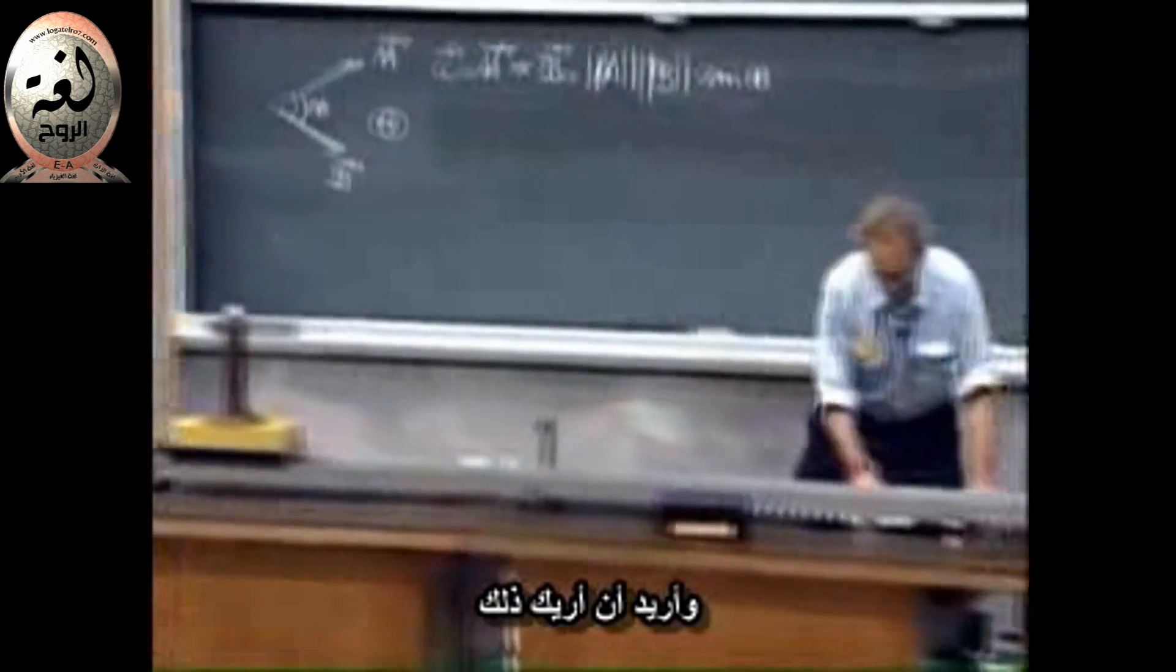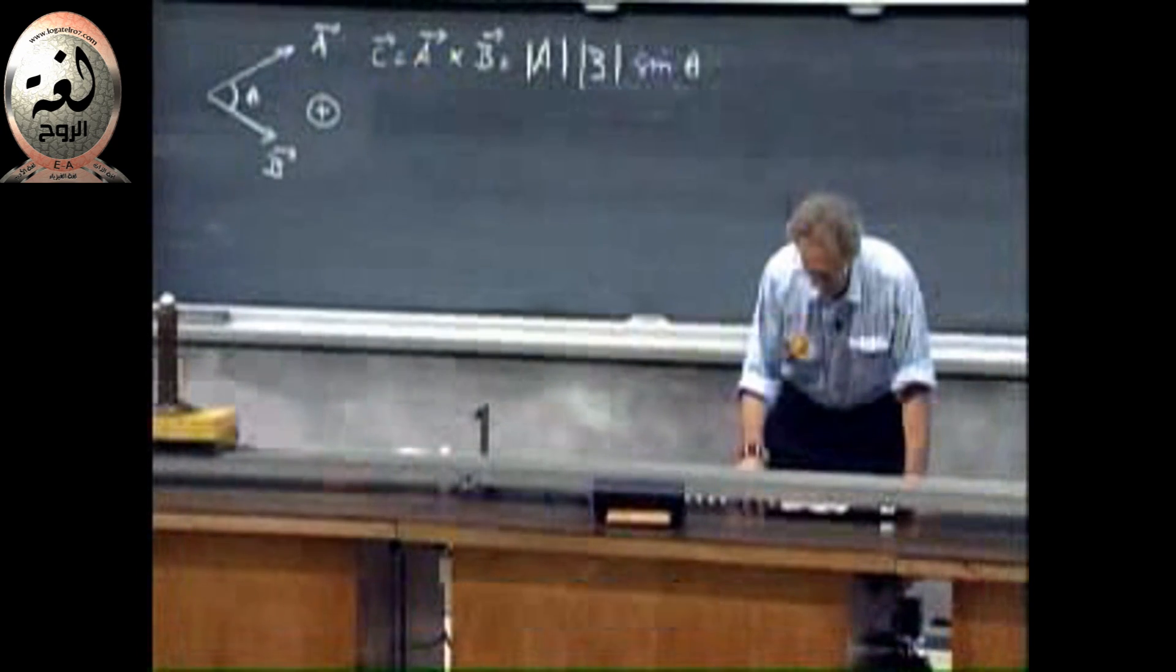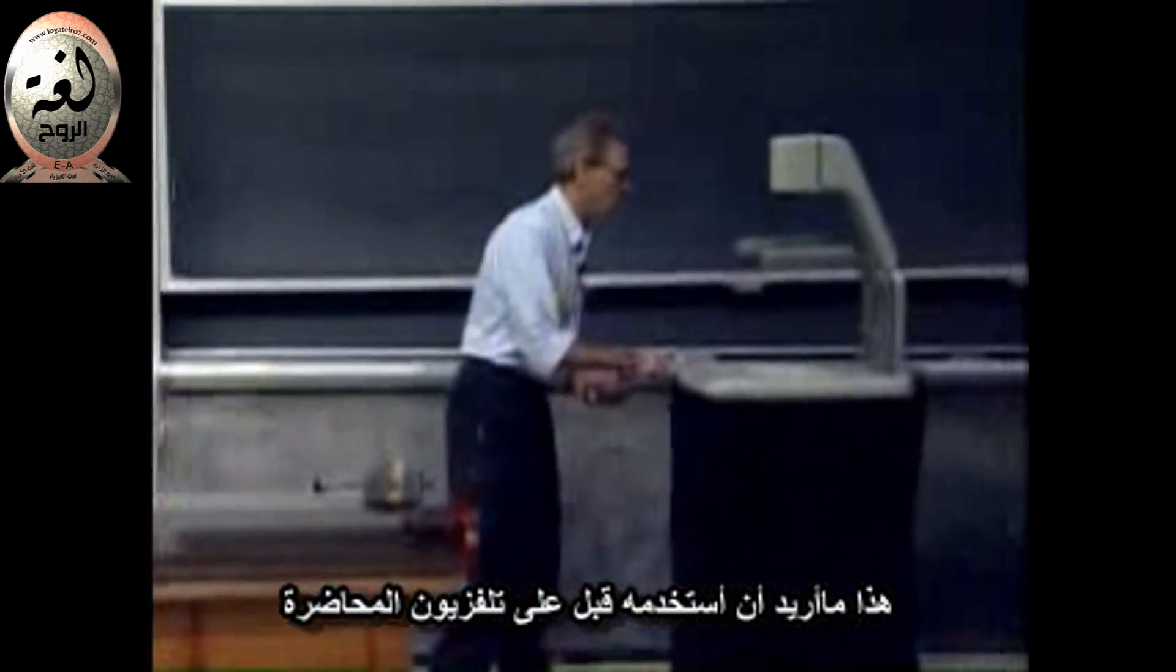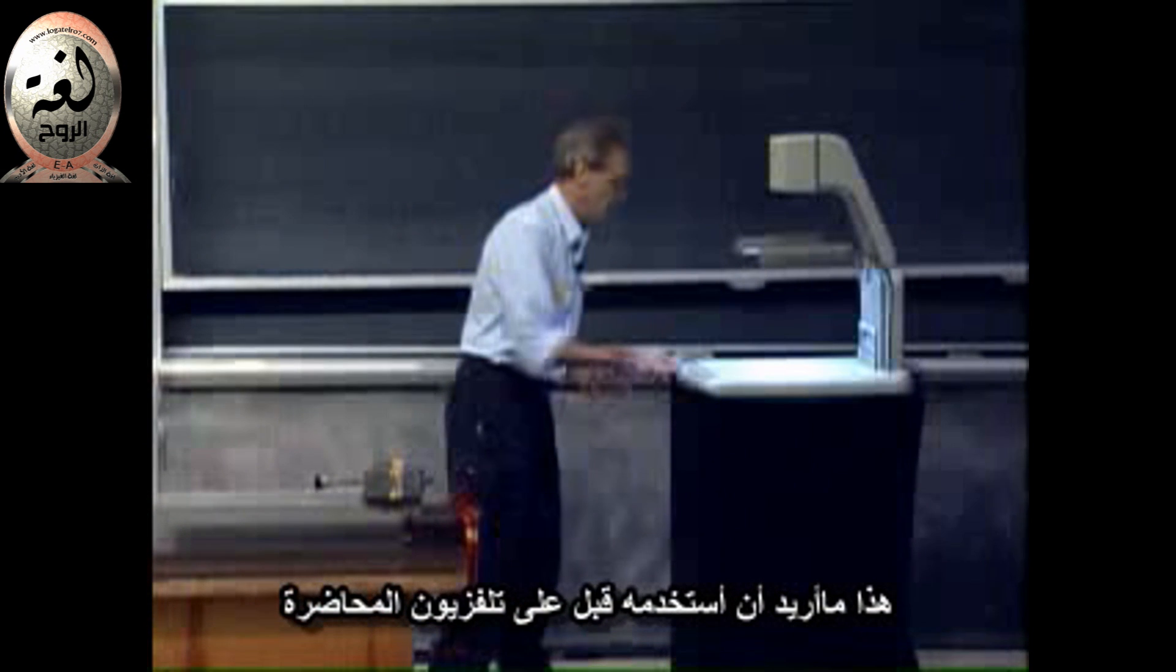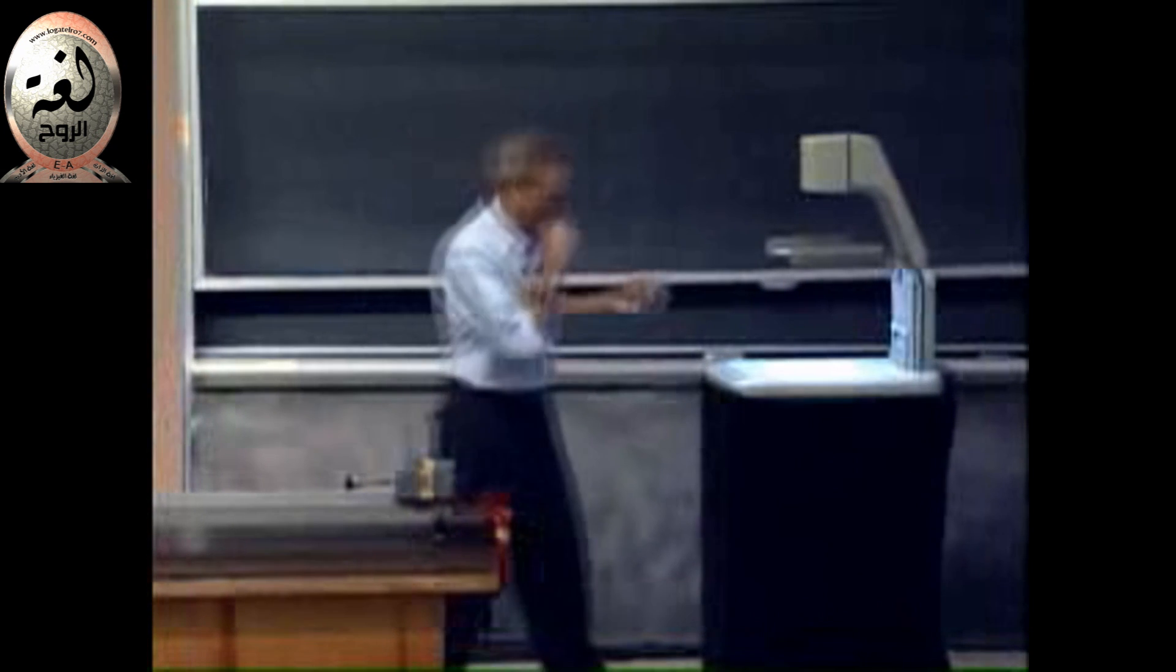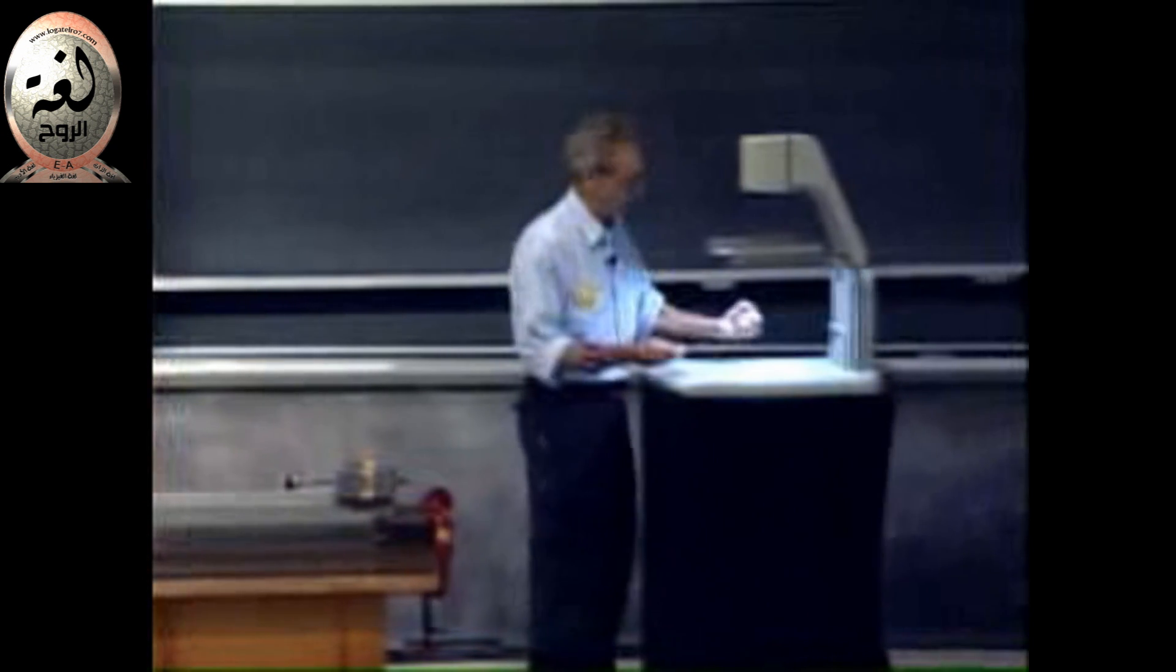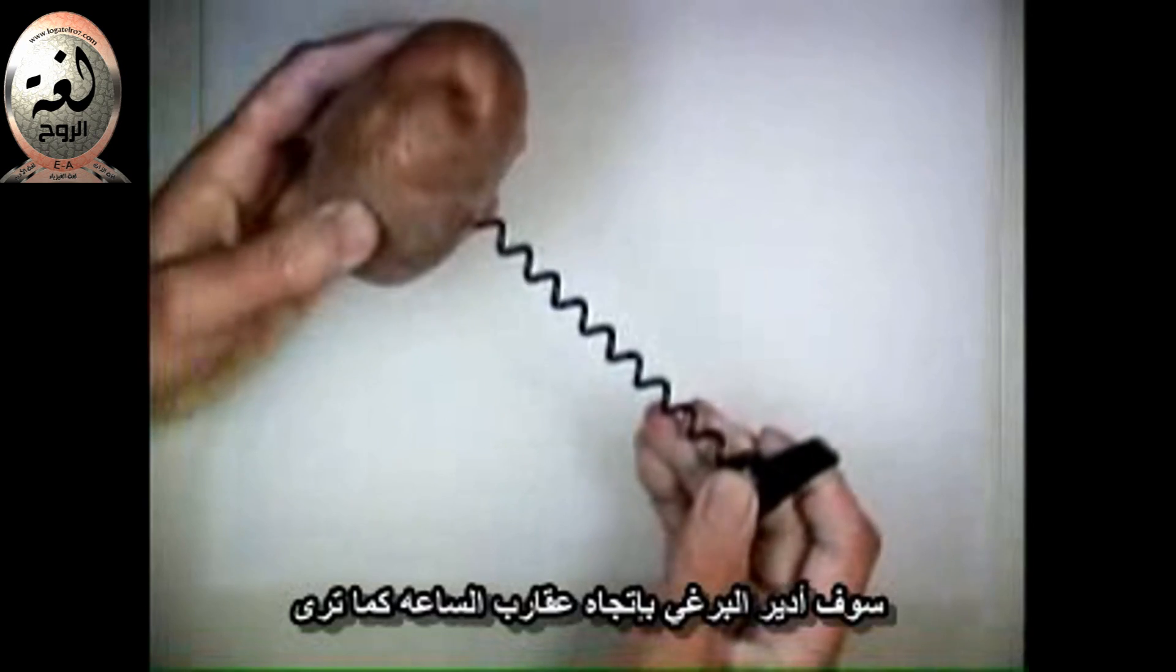And I want to show that to you in a way that may appeal to you more. This is what I have used before on my television help sessions that I've given at MIT. I have an apple... not an apple. This is a tomato. Not a tomato. It's a potato. I have a potato here, and here is a corkscrew. There's a corkscrew.